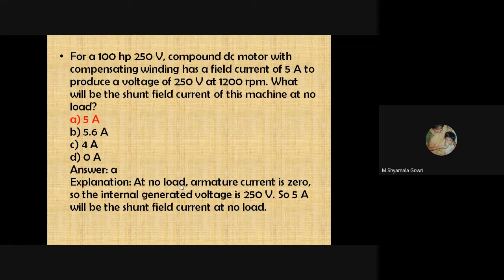For a 100 HP, 250-volt compound DC motor with compensating winding, a field current of 5 amps produces 250 volts at 1200 rpm. What is the shunt field current at no load? The answer is 5 amps, because at no load the armature current is zero, so the internally generated voltage is 250 volts and 5 amps flows only through the shunt field.